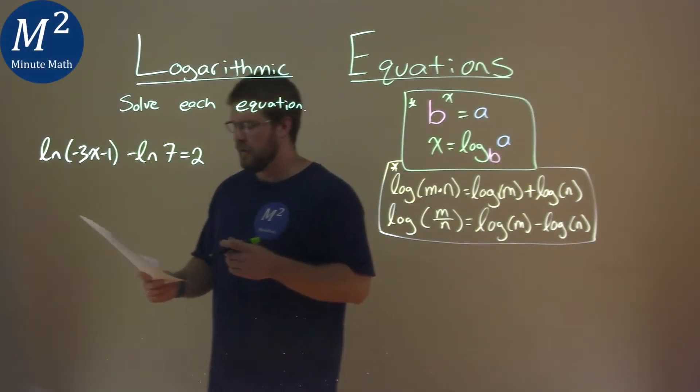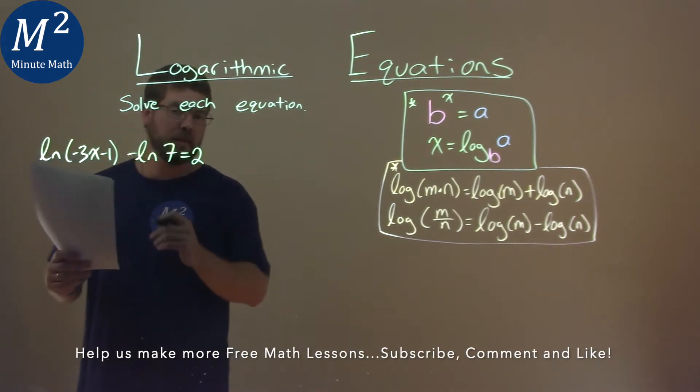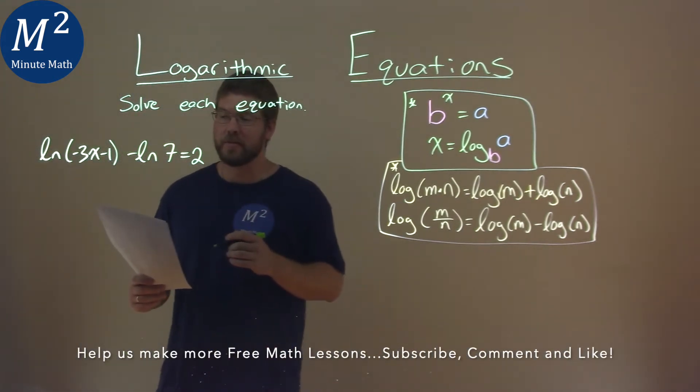We're given this problem right here: the natural log of negative 3x minus 1, minus natural log of 7, equals 2, and we need to solve this equation.